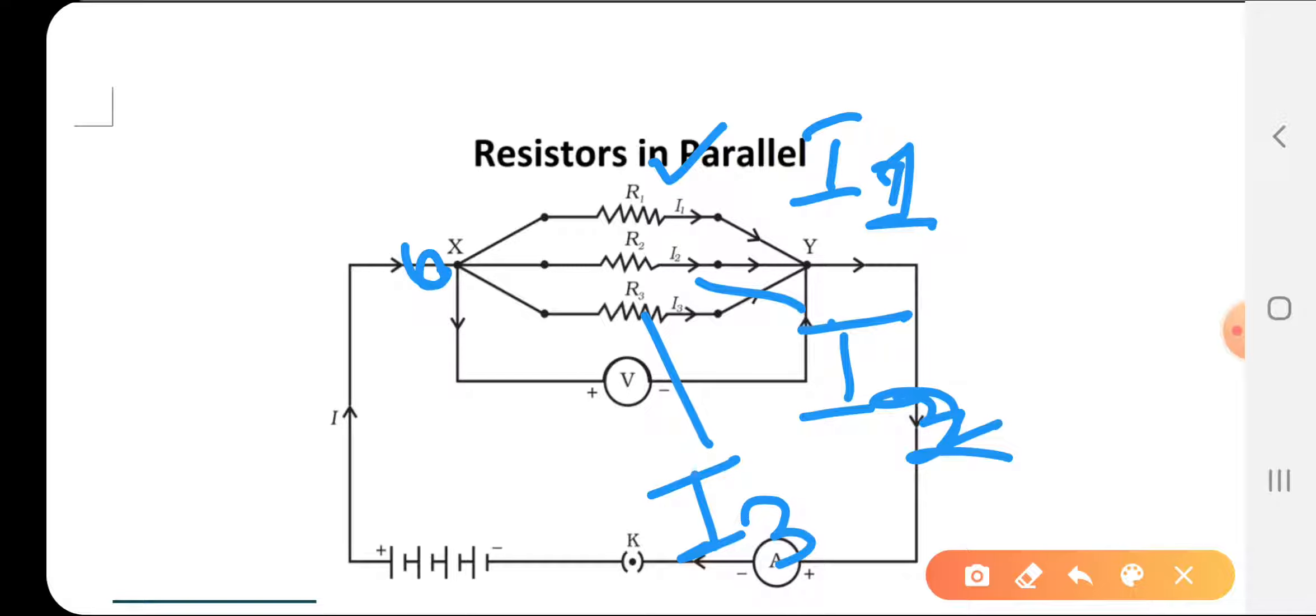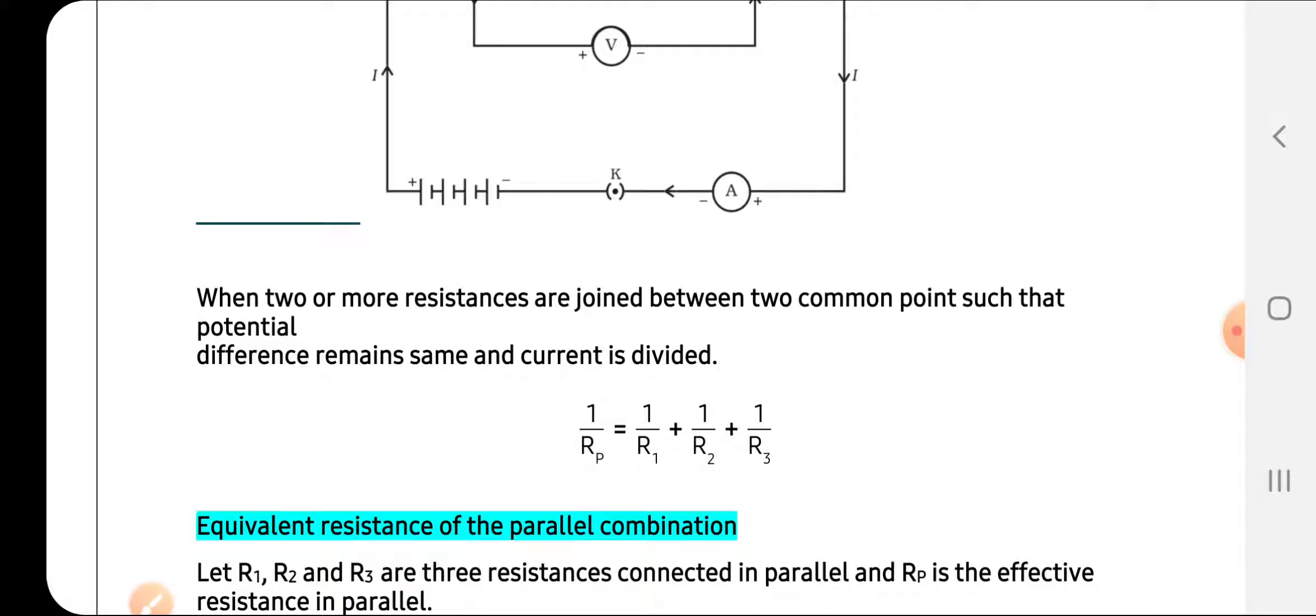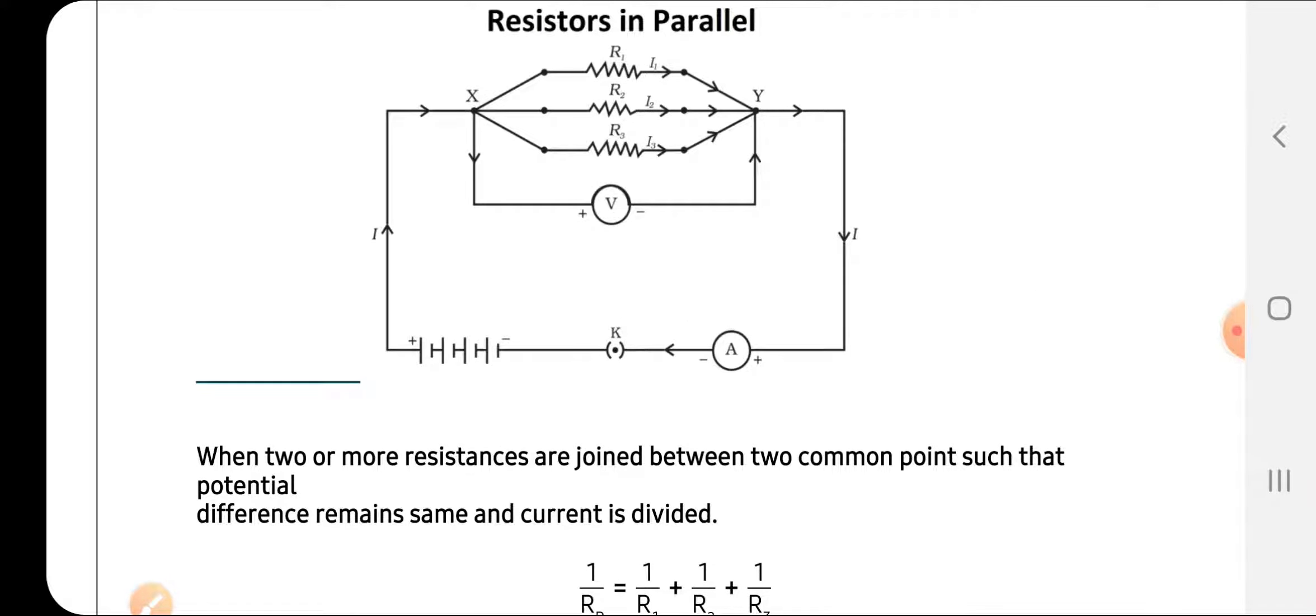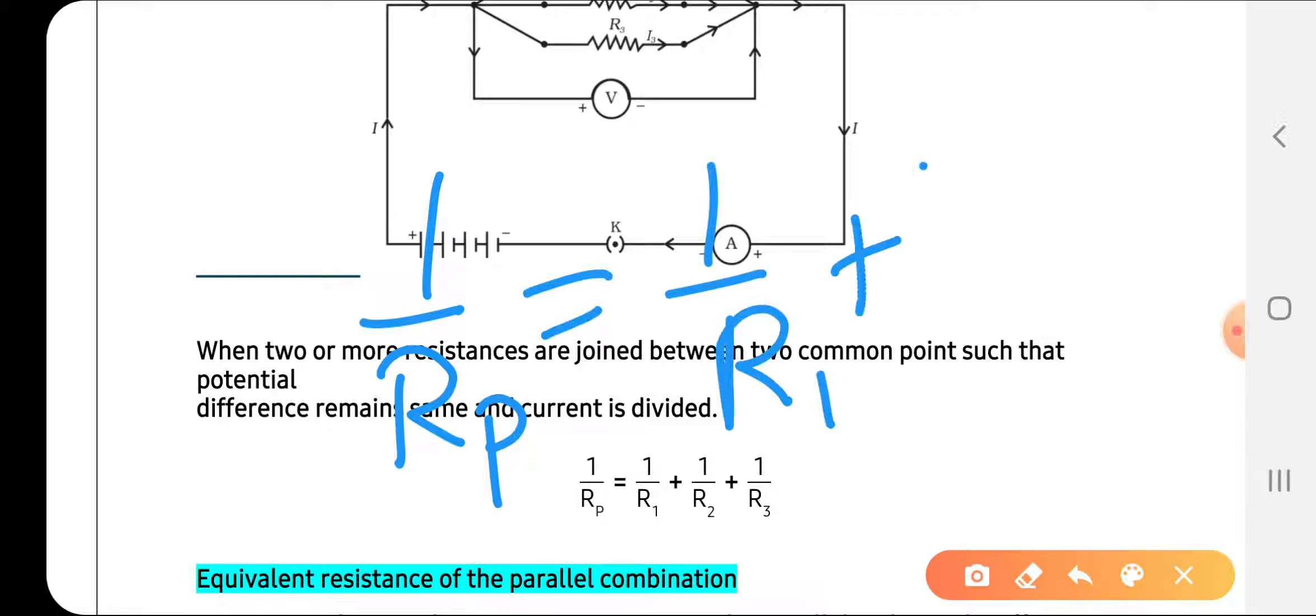Let us start with this: When two or more resistances are connected with each other at a common point such that the potential difference remains the same and current divides, in that case we calculate the equivalent resistance using the formula: 1/R = 1/R1 + 1/R2 + 1/R3.